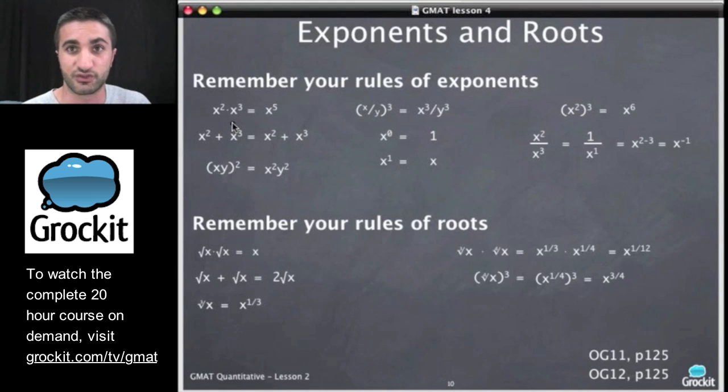So if you're comfortable with these, great. If not, you just have to memorize them. So x squared times x cubed is x to the fifth. We add these values when the bases are similar. When we are adding, we cannot do that. x squared plus x cubed is just that, x squared plus x cubed.